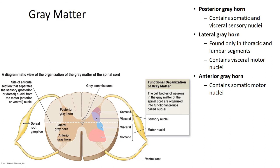The spinal cord also contains white matter, which has large numbers of myelinated and unmyelinated axons. Like gray matter, white matter is further subdivided into functional and structural areas. The structural components are divided into columns: the posterior white column lies between the posterior gray horns and the posterior median sulcus; the lateral white column includes the white matter on either side of the spinal cord between the anterior and posterior columns; and the anterior white column lies between the anterior gray horns and the anterior median fissure.